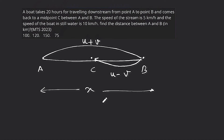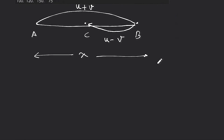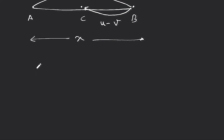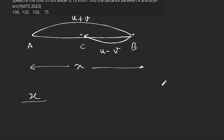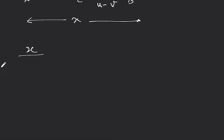Total time is 20 hours. Time equals distance upon speed. So x distance downstream at speed u plus v gives x upon (u plus v), and x by 2 distance upstream at speed u minus v gives (x by 2) upon (u minus v). Total equals 20.